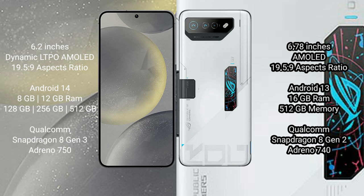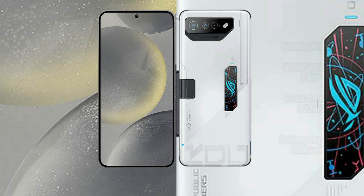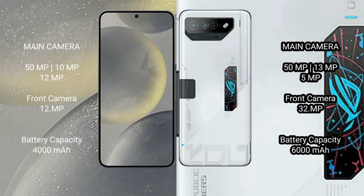The ASUS ROG Phone 7 Ultimate has a Qualcomm Snapdragon 8 Gen 2 processor and Adreno 740 GPU. The Samsung Galaxy S24 features a triple camera setup: 50MP plus 10MP plus 12MP, and a 12MP front camera. The ASUS ROG Phone 7 Ultimate features a triple camera setup: 50MP plus 13MP plus 5MP, and a 32MP front camera. The Samsung Galaxy S24 has a 4000mAh battery with 25W fast charging support.